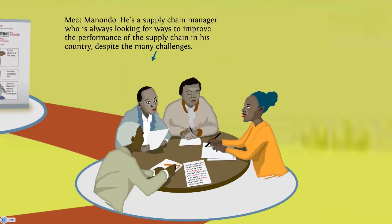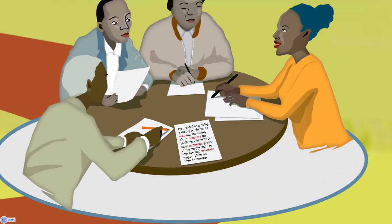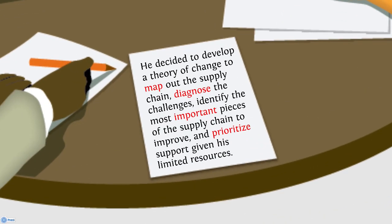Meet Manondo. He's a supply chain manager who is always looking for ways to improve the performance of the supply chain in his country despite the many challenges. Manondo has had trouble avoiding stockouts at village clinics this year, but he doesn't know why. He decided to develop a theory of change to map out the supply chain, diagnose the challenges, identify the most important pieces of the supply chain to improve, and prioritize support given his limited resources.